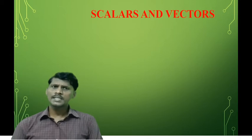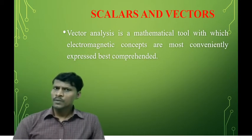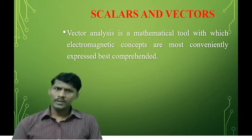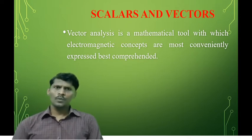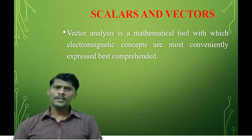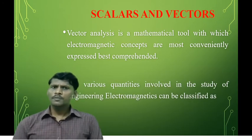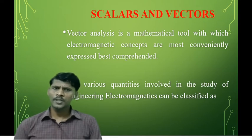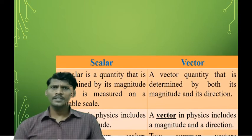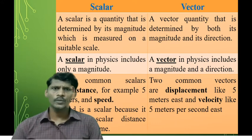Coming to scalars and vectors: vector analysis is a mathematical tool with which electromagnetic concepts are most conveniently expressed. The various quantities involved in the study of engineering electromagnetics can be classified as scalars and vectors. A scalar is a quantity that has only magnitude, while a vector is a quantity that has both magnitude and direction.